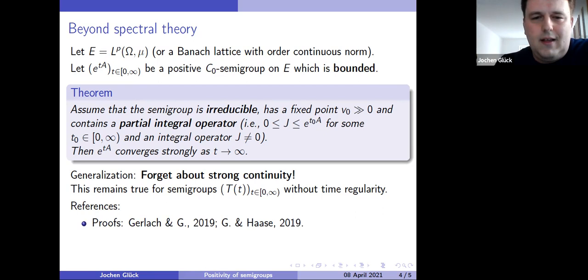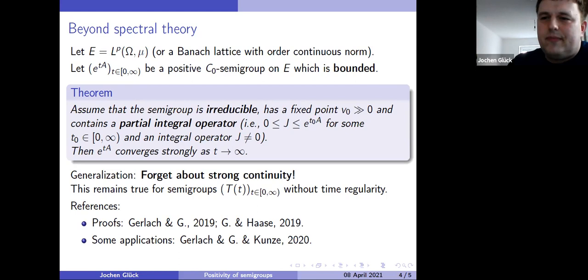What's the benefit of it? Well, if you consider parabolic equations on R^D with unbounded coefficients, you can often still prove some kind of generation result. But it's not going to be strongly continuous, the semi-group you obtain. And then you can use results of this kind to prove convergence results to equilibrium as time tends to infinity. This was by Moritz and Markus Kunze. I think he was here yesterday, 2020.